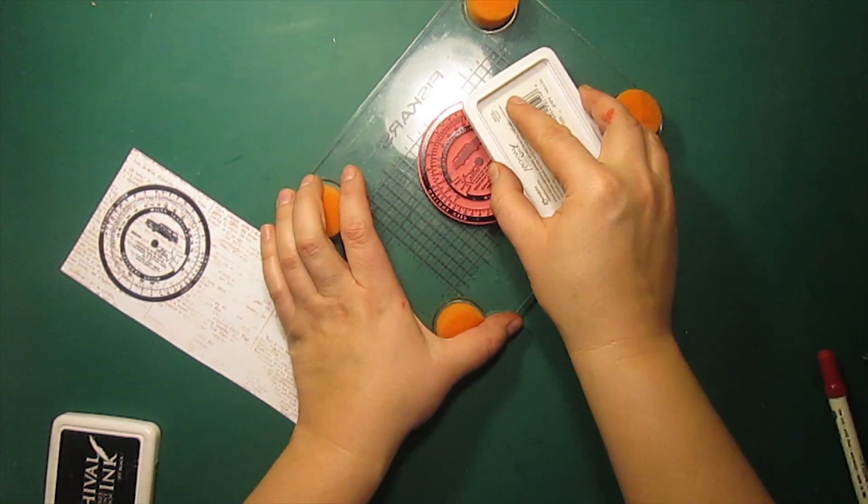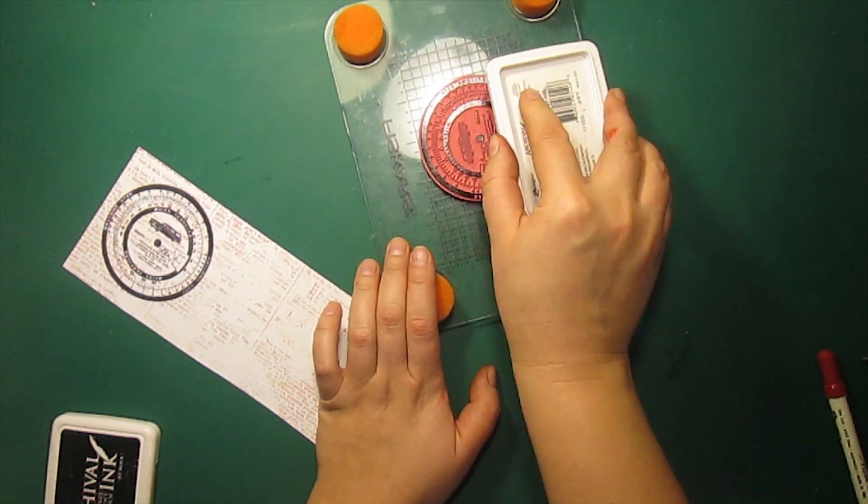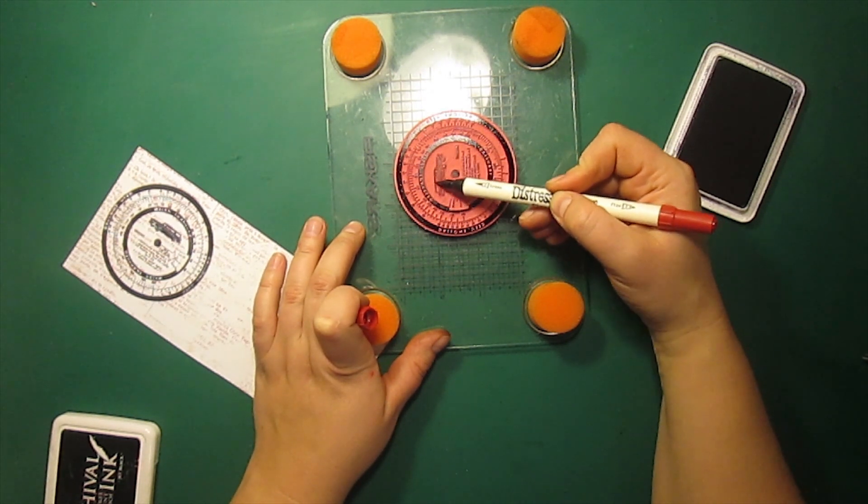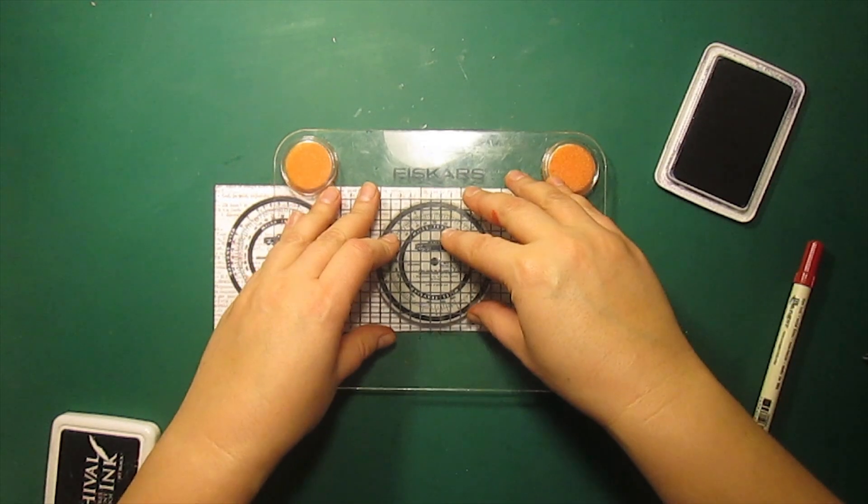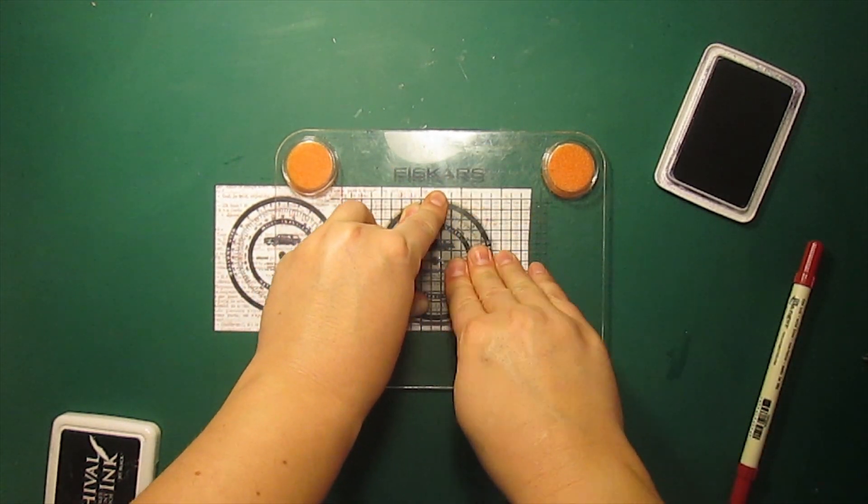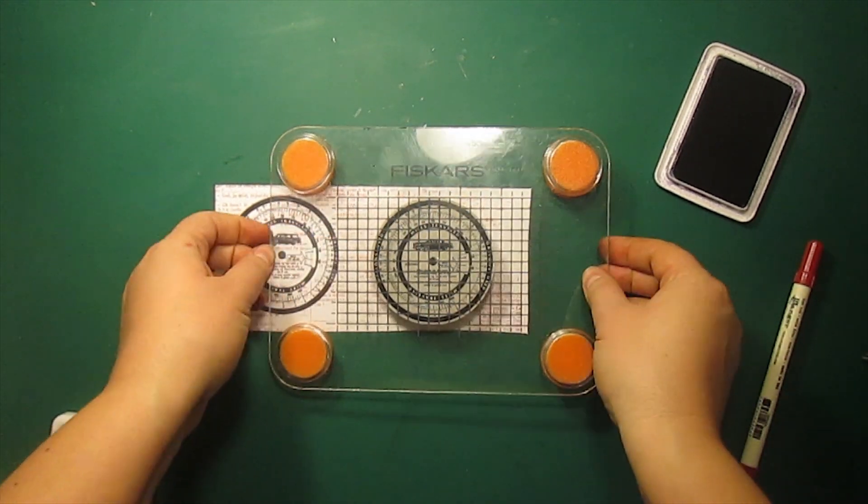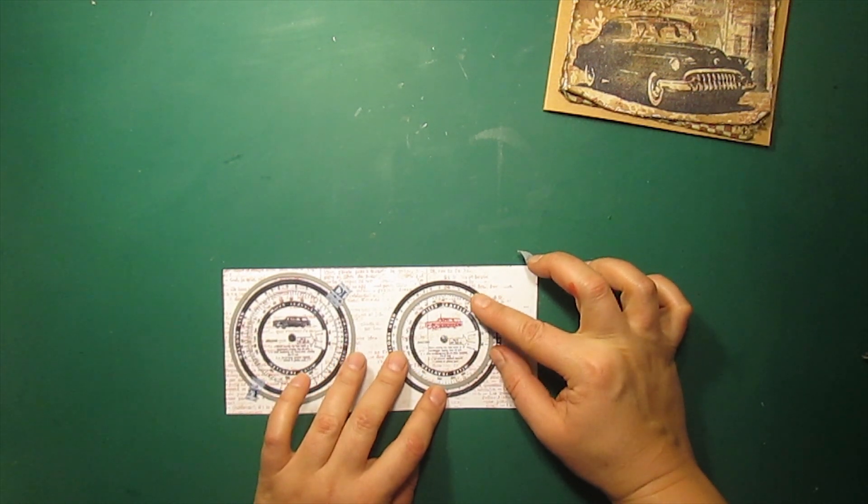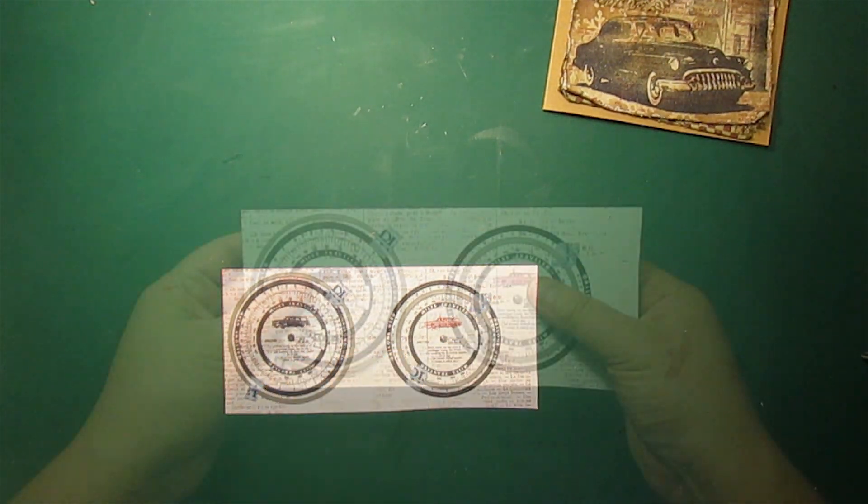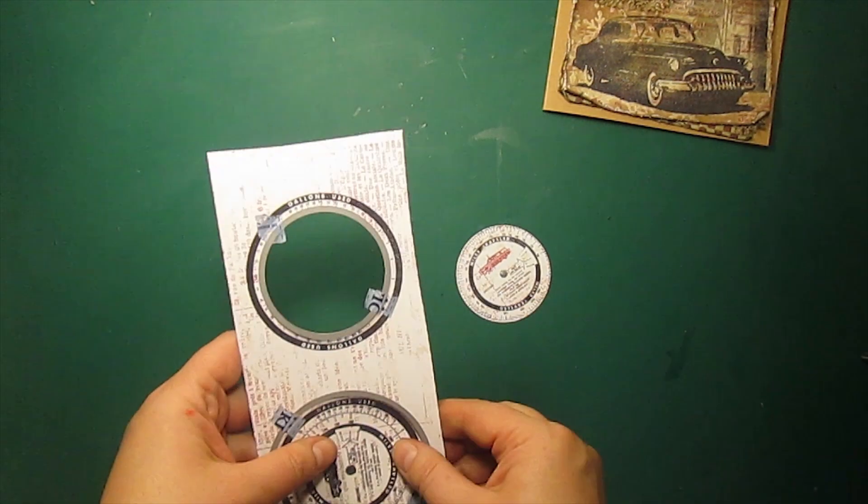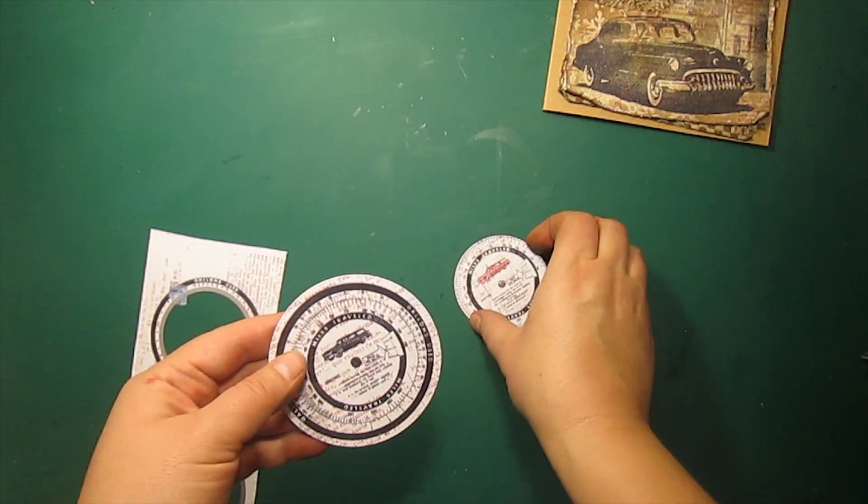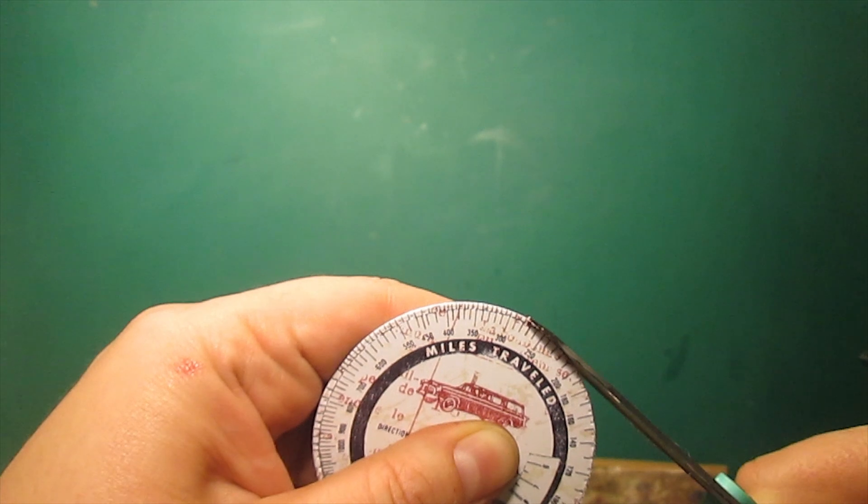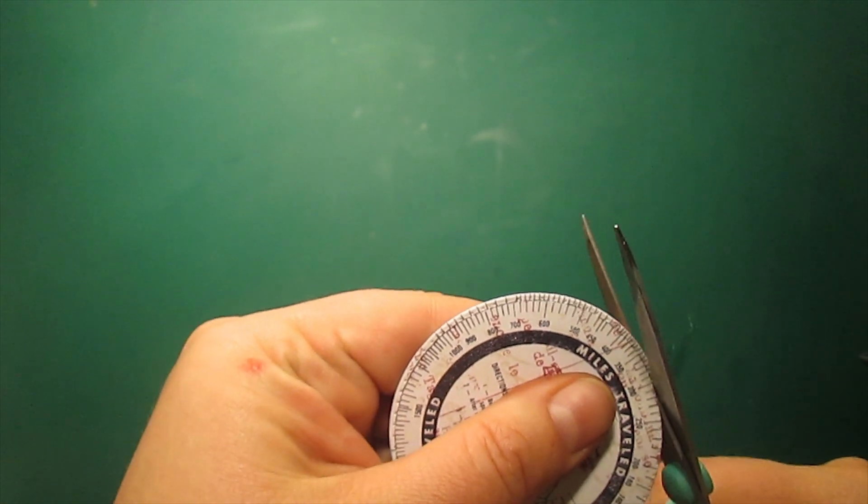I have stamped this fuel calculator image once with the black archival ink and now I'm going to stamp it again but I will use fired brick distress marker for the little car image in the center. Then I'm using two circle dies to cut out the images. One die turned out to be slightly larger than I need so I will use the scissors to cut out the circle that shows miles traveled.